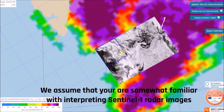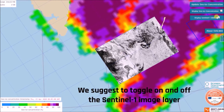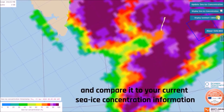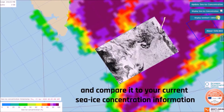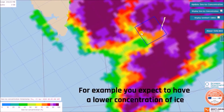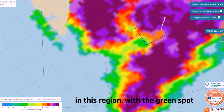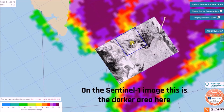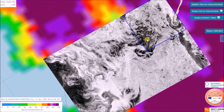We assume that you are somewhat familiar with interpreting Sentinel-1 images. It is not always easy. What we suggest is to toggle on and off the Sentinel-1 image layer and compare it to your current CIS concentration information. For example, you expect to have a lower concentration of ice and this region is a green spot — on the Sentinel-1 images, this is the darker area, which is open water.